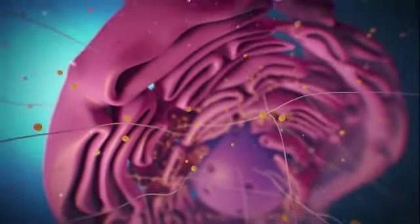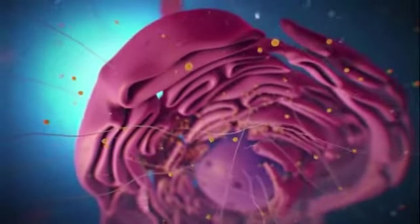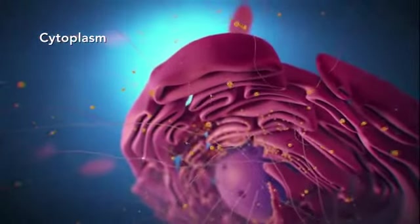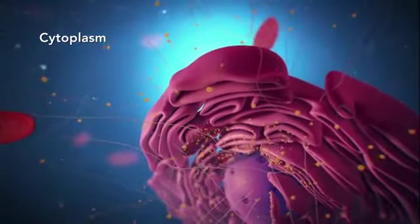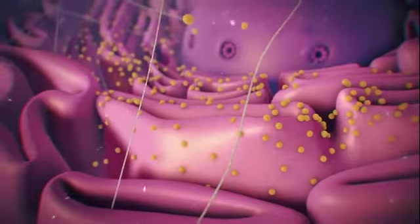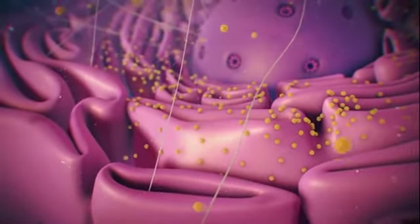Outside the nucleus, the ribosomes and the rest of the organelles float around in cytoplasm, which is the jelly-like substance. Ribosomes may wander freely within the cytoplasm or attach to the endoplasmic reticulum, sometimes abbreviated as ER.